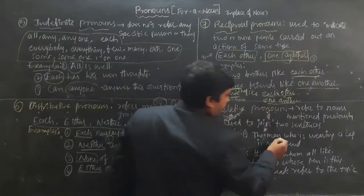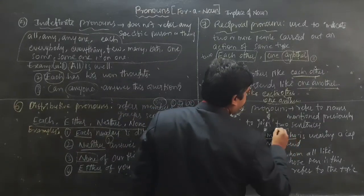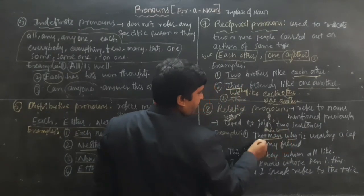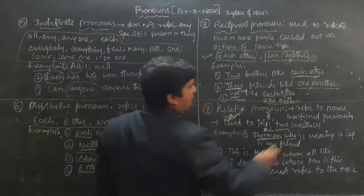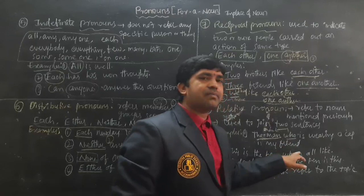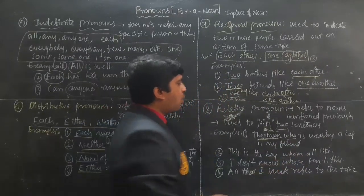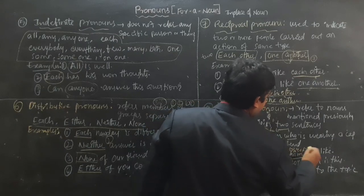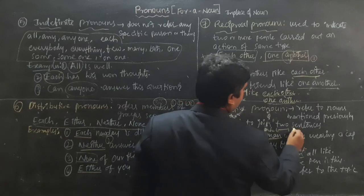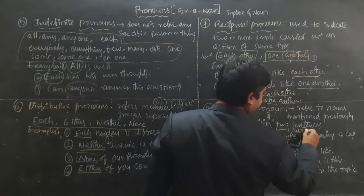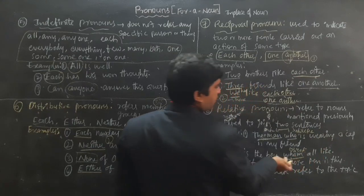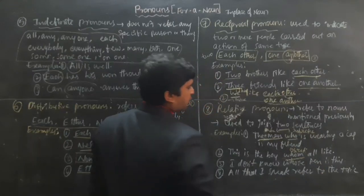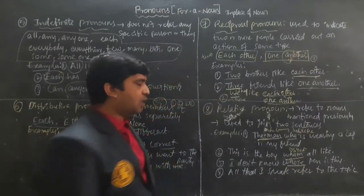For example: 'The man who is wearing a cap is my friend.' The same man is being referred to. 'Who' is used in the subjective case and 'whom' in the objective case. 'Whose' is used for ownership — for example, 'I don't know whose pen this is.'